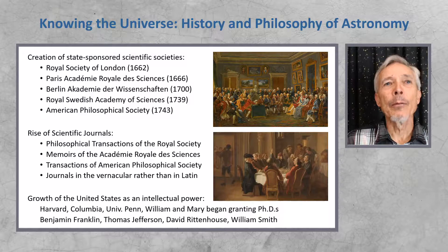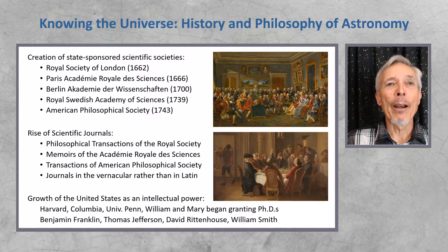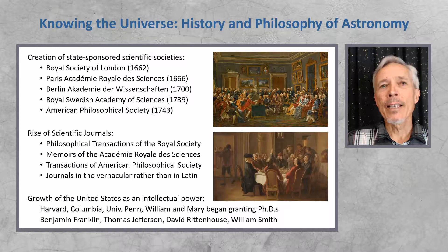We also had the rise of scientific journals, starting in England with the Philosophical Transactions of the Royal Society, and analogous journals in France and then in America. Another important transition was the shift from Latin to the vernacular — to colloquial English, French, or German — and these journals were translated among the European languages so everyone could benefit.